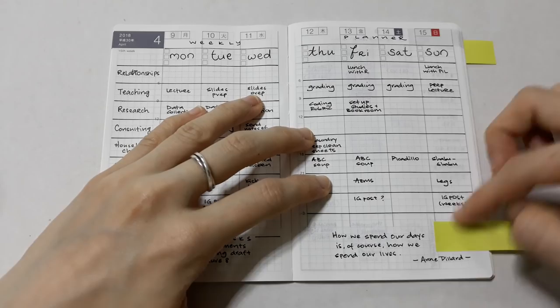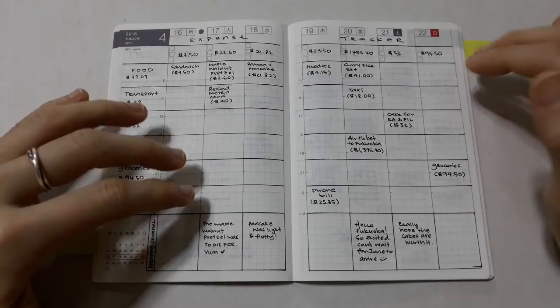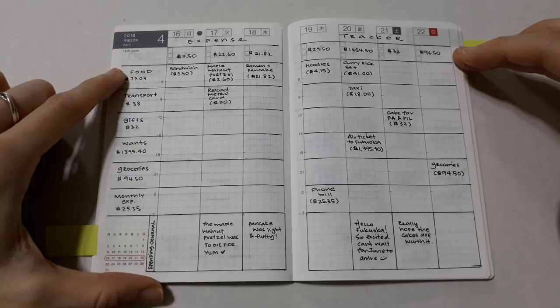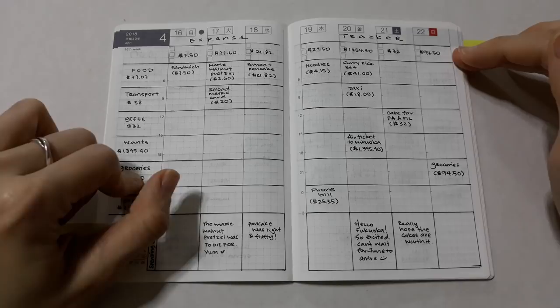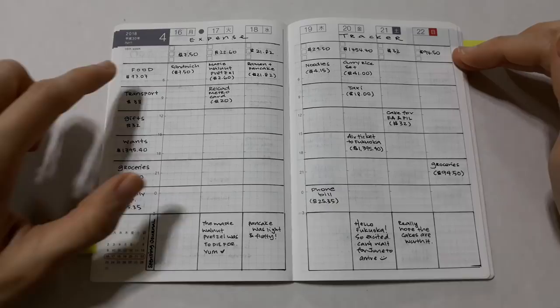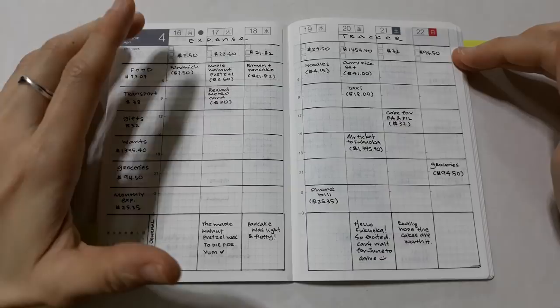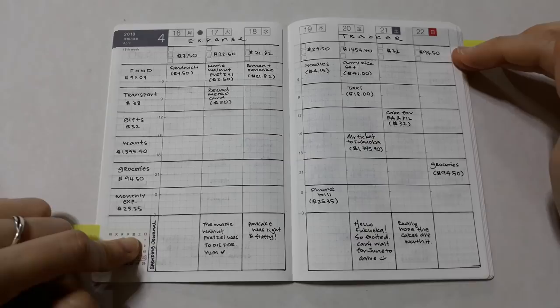Now you could use the supplement as an expense tracker. I divided the spread into rows and wrote down my expense categories such as food, transport, etc. Every day I record my expenses in each category. And at the end of the week I tally my expenses both by category and by day. This is how I can see where my money is going.